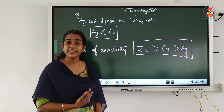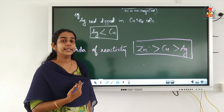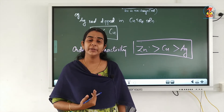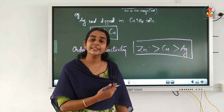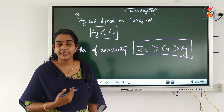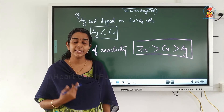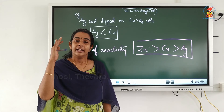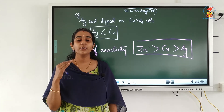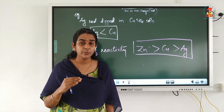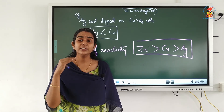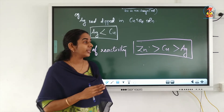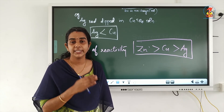This competitive electron transfer concept is used to study the order of reactivity of different metals, and using this we can prepare the electrochemical series. The electrochemical series is also known as the activity series, which you will study next year in class 12. It is the series in which metals are arranged based on their order of reactivity, assessed through this competitive electron transfer process.